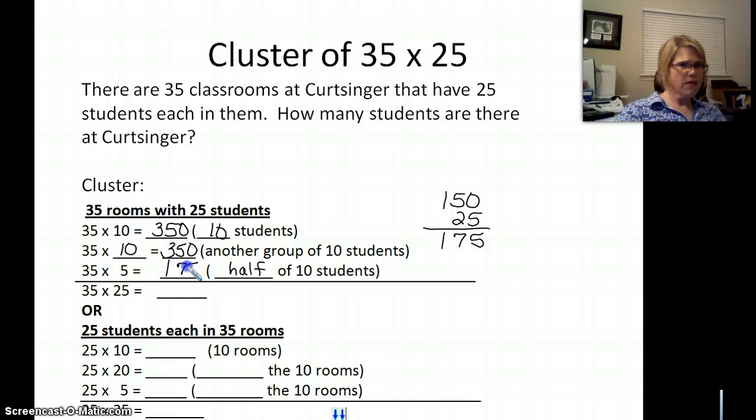Can you add your 350 and 350 together? 300 and 300 is 600. 50 and 50 is 100. I don't know where that came from. And so that's a total of 700. So I'm going to jot that down over here. 700 and another 175 is 875. So our total is 875.